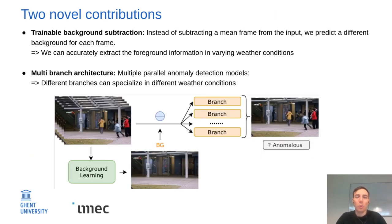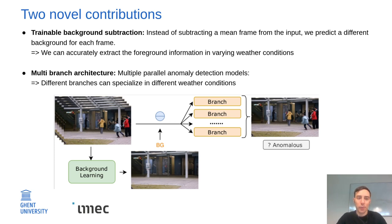In this paper we present a novel deep learning based architecture to do video anomaly detection in these adverse weather conditions. It's built around two novel contributions: a trainable background subtraction step and a multi-branch architecture.